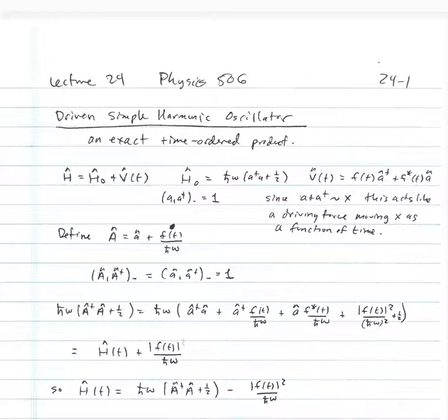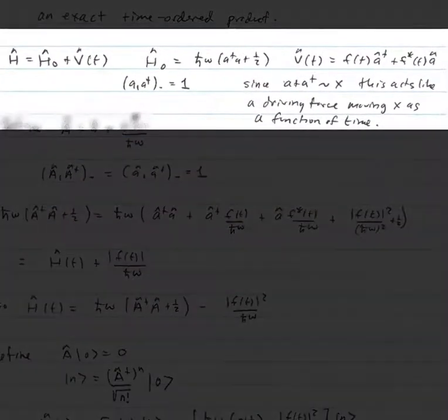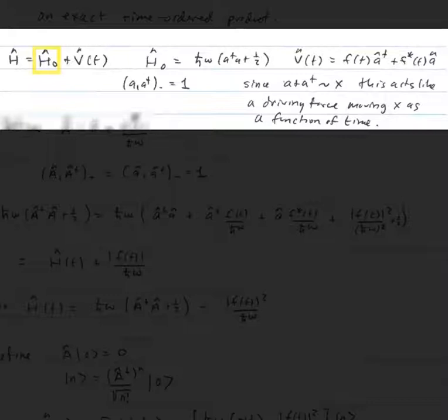We're going to start by looking at our Hamiltonian. As we described before, we think of that as composed of two pieces: an H0, which is time independent, and a V(t), which depends on time. In some sense that V(t) must be small, but it can be a large interaction that acts over a short period of time, and that would still end up having a net effect that is small.